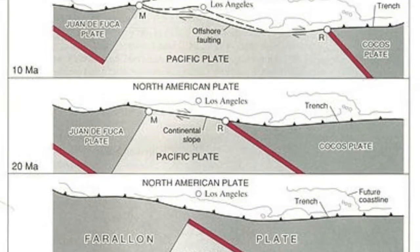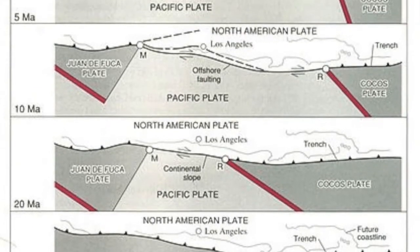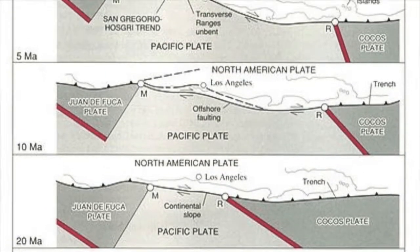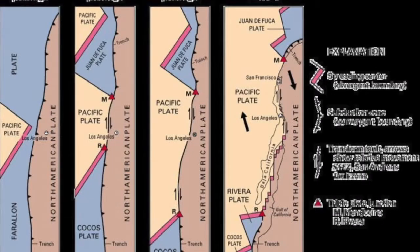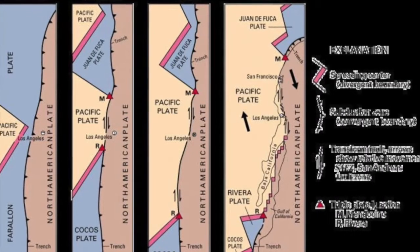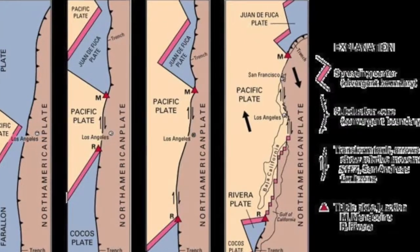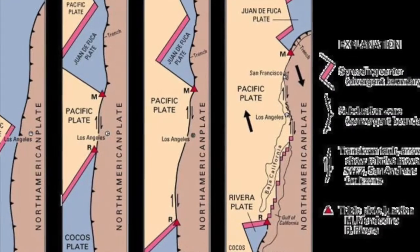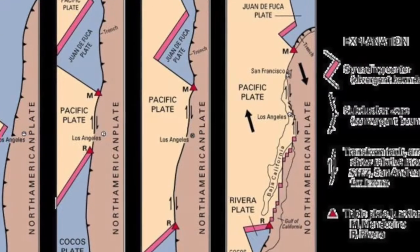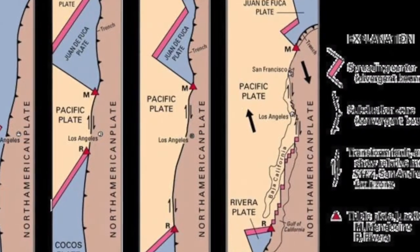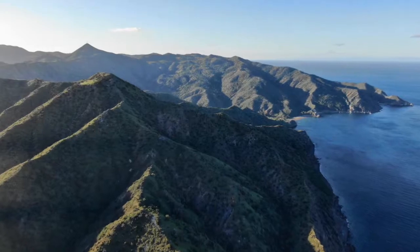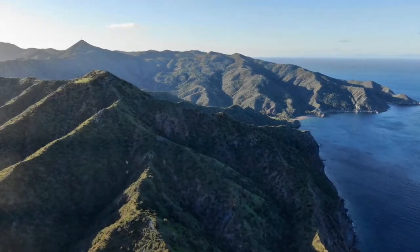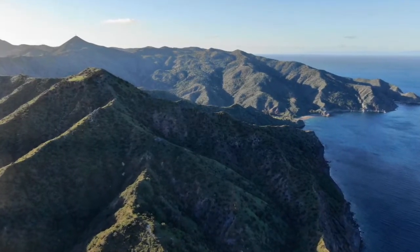This subduction resulted in the uplifting of the North American and Pacific plates and the rising of Catalina Island from the ocean some two million years ago. And that, my friends, is how the beautiful Catalina Island was formed. Thank you for joining us.